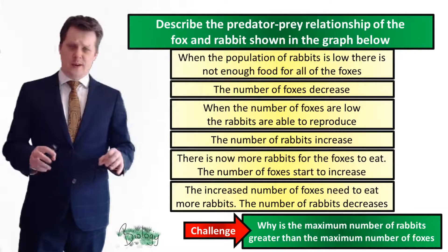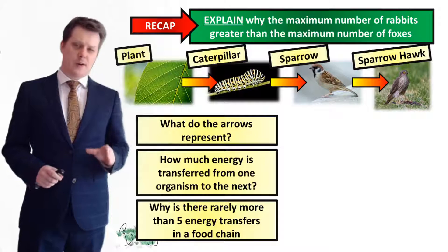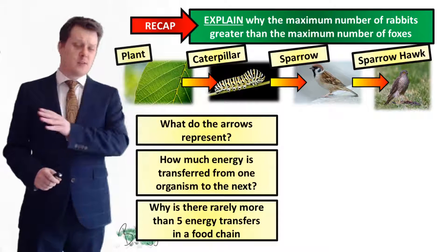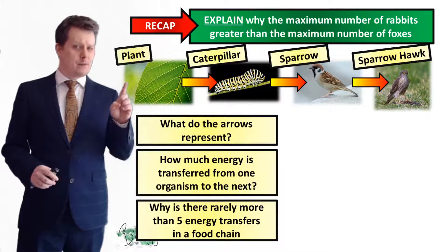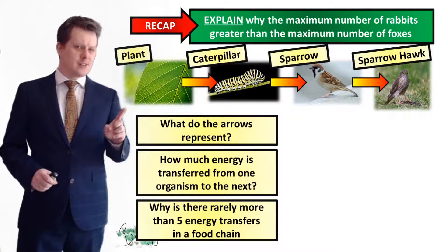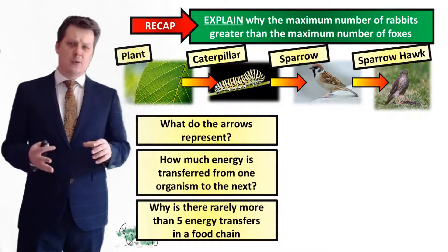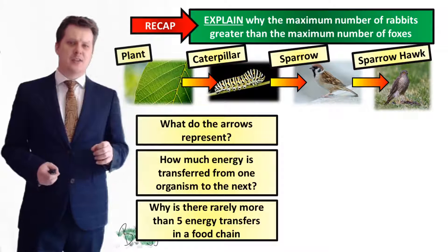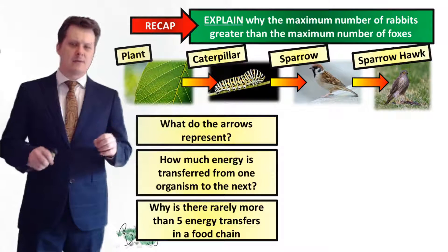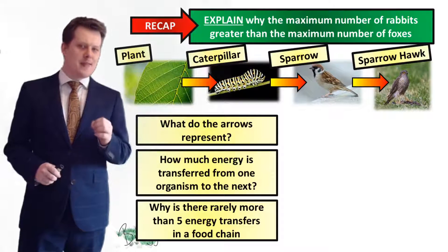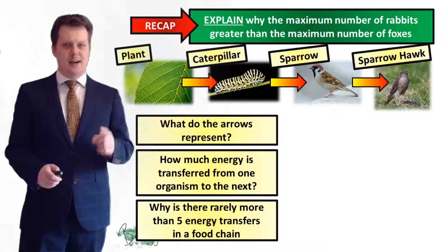For the challenge question, we're going to look at it in a bit more detail, and to do that we're going to quickly recap some things from previous lessons. Here we have a food chain. What I want you to do is answer these three questions: what do the arrows represent? How much energy is transferred from one organism to the next? And why is there rarely more than five energy transfers in a food chain?